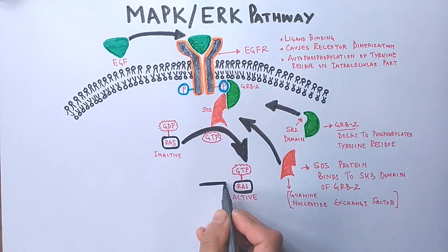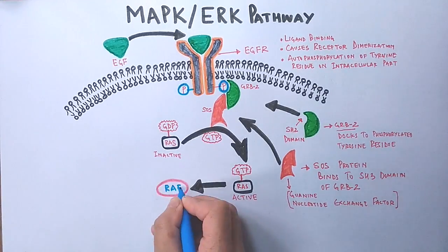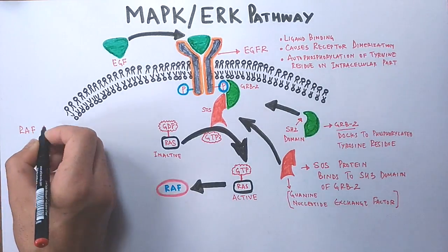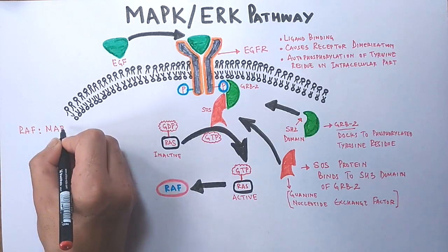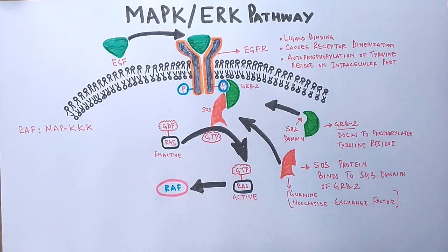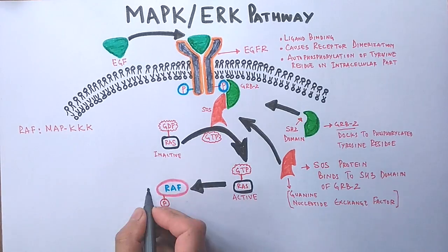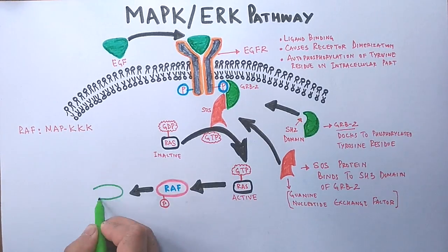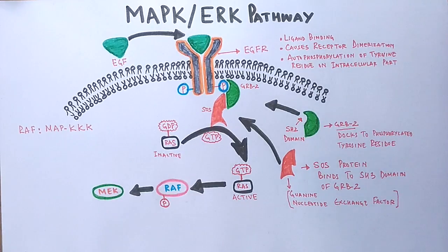Now from here, the kinase cascade kicks in. From here, the activated RAS phosphorylates the RAF molecule. The RAF is also named as MAPKKK, that is MAP kinase kinase kinase. Furthermore, this phosphorylated RAF molecule in turn phosphorylates and activates the MEK molecule.